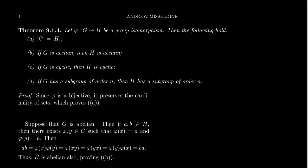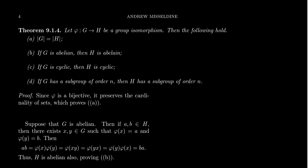In our previous video, we proved what we're calling theorem 9.14: that if two groups G and H are isomorphic, then there are some properties that must be the same about the two groups. The two groups will have to have the same order; if one is abelian, the other is abelian; if one is cyclic, the other is cyclic; if one has a subgroup of order N, the other has to have a subgroup of order N. These properties are often referred to in the literature as invariants — things that do not change as you go from one group to the other because the two groups are isomorphic.